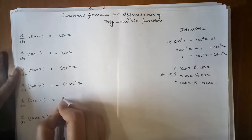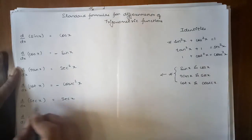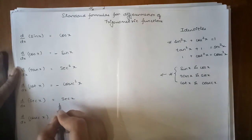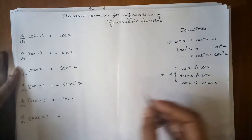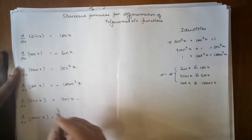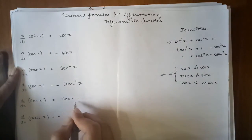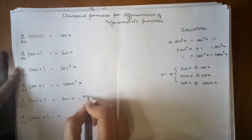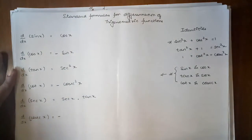Differentiation of sec x: you write down the question first, so your answer has your question again — that means sec x. And as we can see there is a relation between tan x and sec x, so sec x is already written, and we write down the leftover trigonometric function, which is tan x. So the answer is sec x tan x.